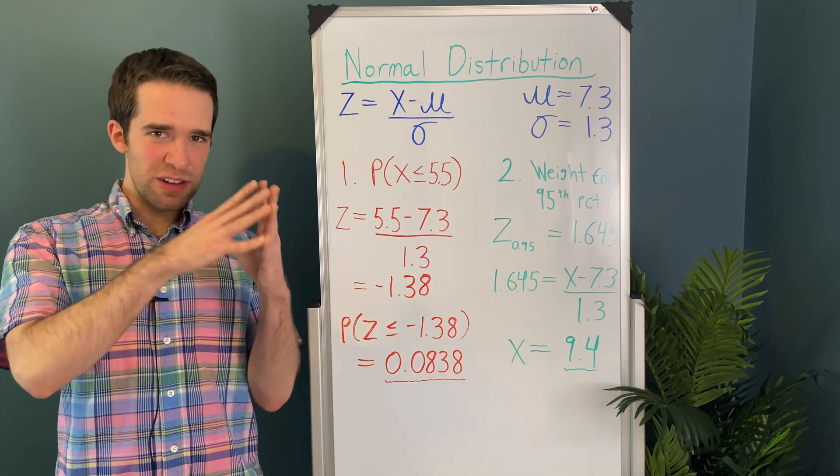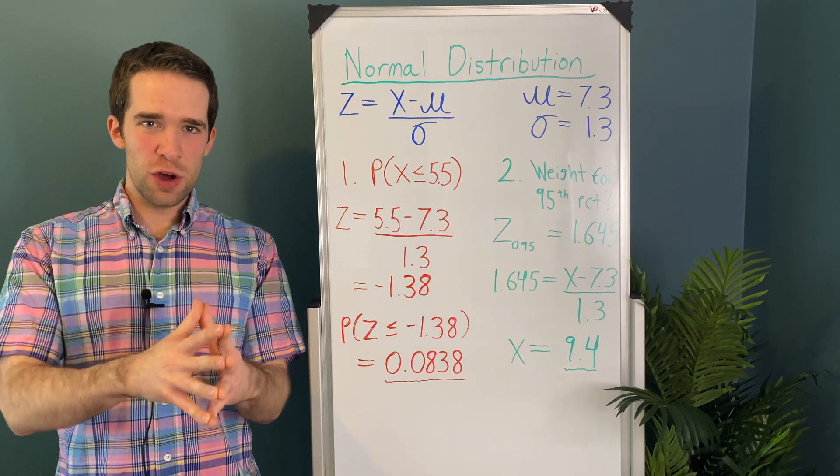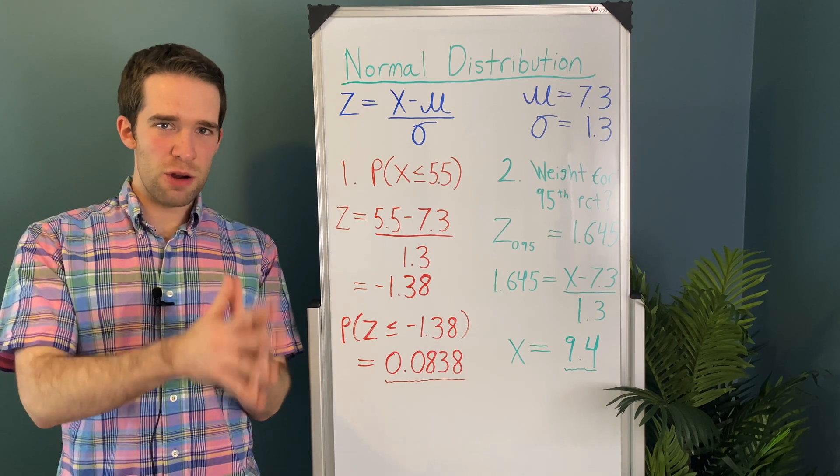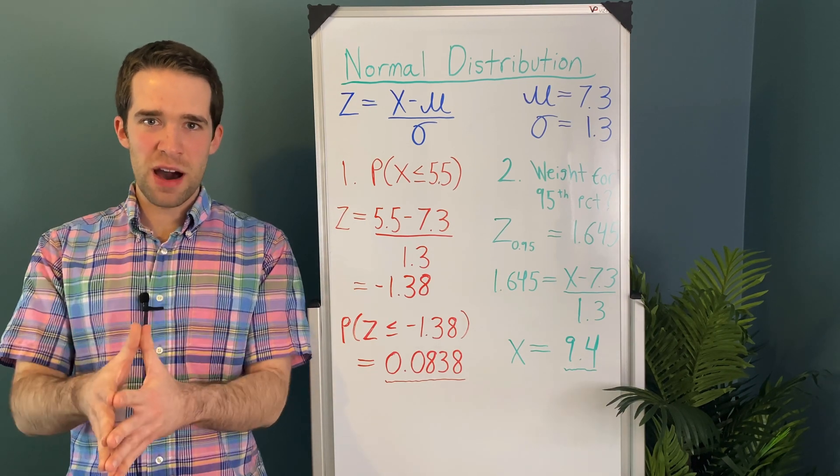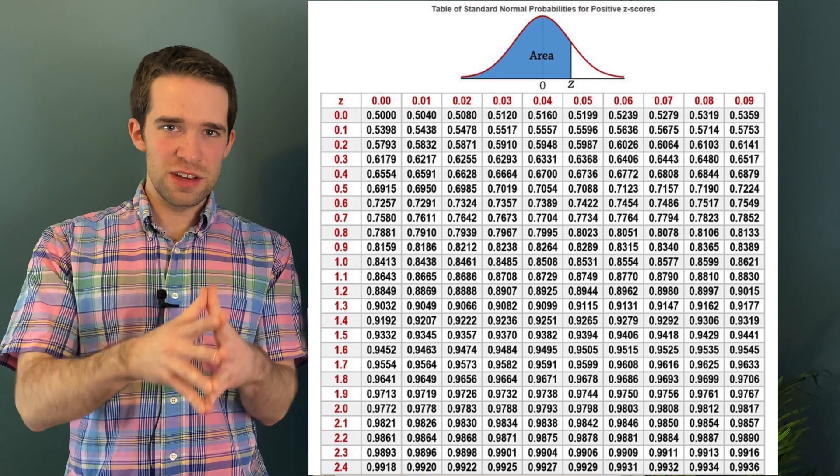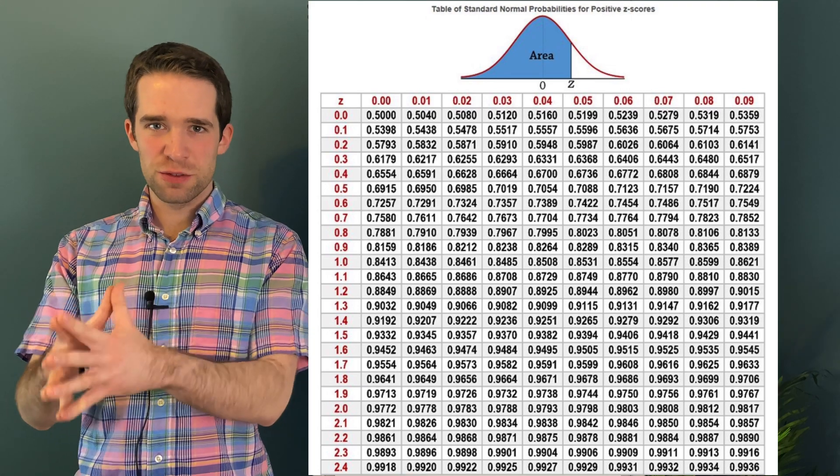So we're actually going to start with our normal probability table. And we're going to look for the z-score corresponding the closest to an area to the left of .95. So you're going to look down your table and you're going to see that the closest z-scores to that are 1.64 and 1.65.